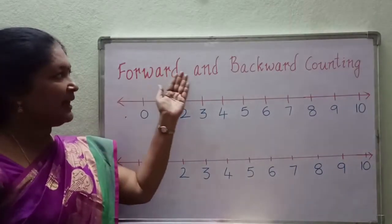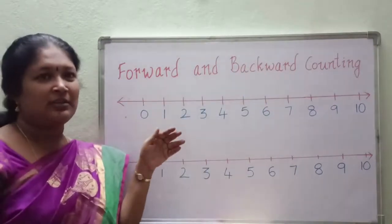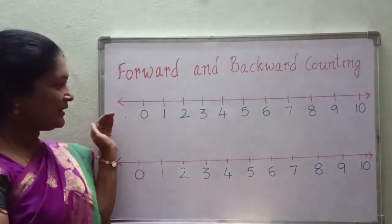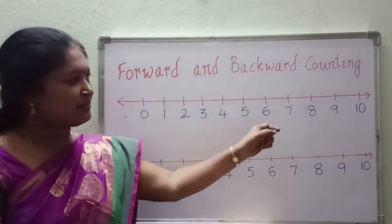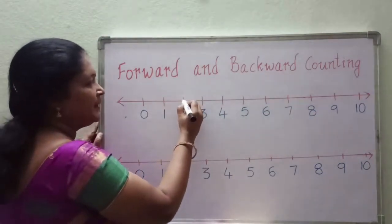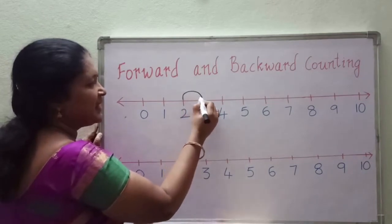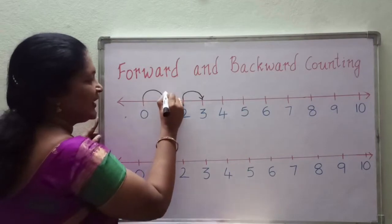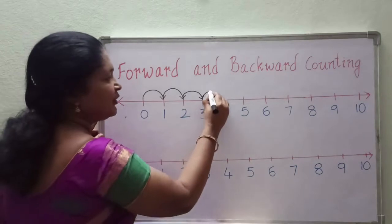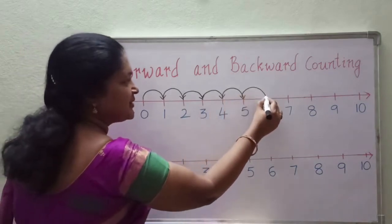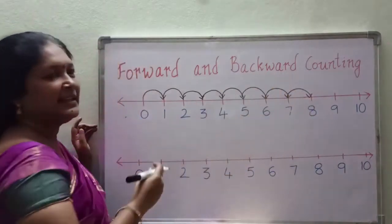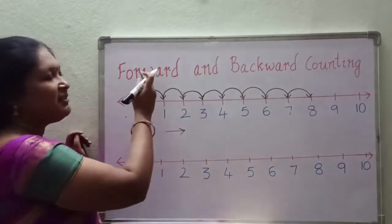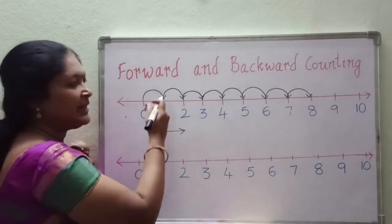Now forward and backward counting. See children, on a line some numbers are arranged with equal distance — that is called a number line. On the number line, from 0 the numbers start till 10. From left to right the numbers are moving. If the numbers move from left to right, that is called forward counting.